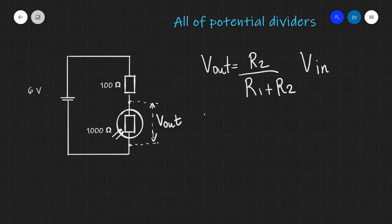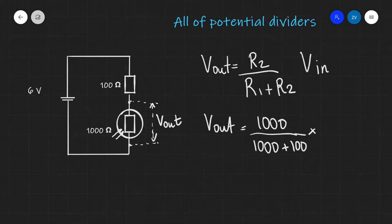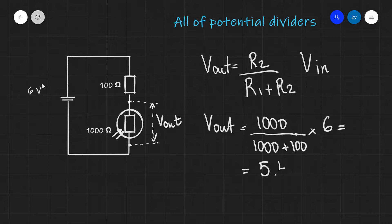So this means that we can calculate V_OUT directly, and this will be equal to 1000 — which will be our R2 — divided by R1 plus R2, which is going to be 1000 plus 100. All of this is multiplied by our input voltage, which is just 6 volts, so that's the EMF in the circuit. And if we plug this into a scientific calculator, we're going to get approximately 5.45 volts as the output voltage across the LDR.